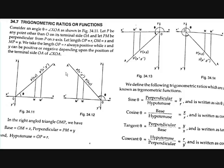The length MP is equal to Y. Now, the length of OP is R, which is always positive. X and Y can be positive or negative, but the length of OP will be positive at all times.